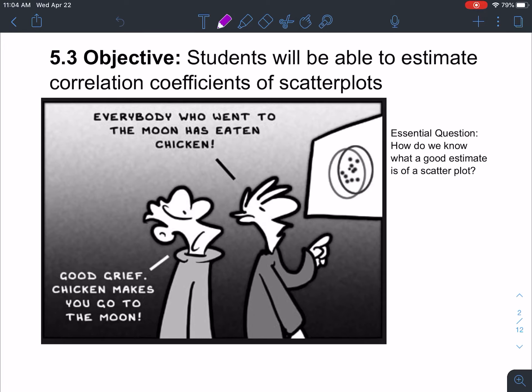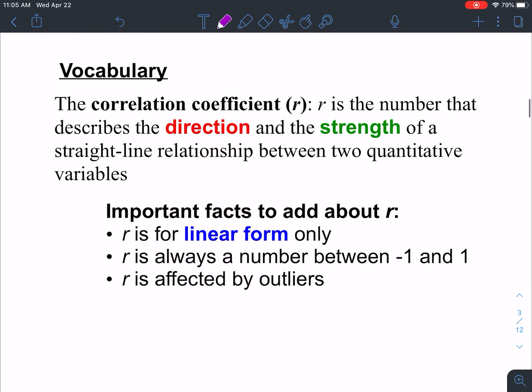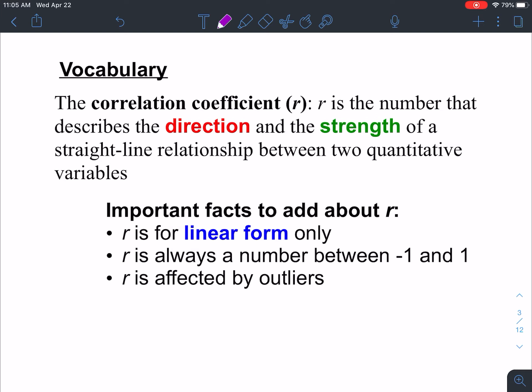Hi guys and welcome to today's notes on 5.3. Today we're going to talk about something called a correlation coefficient, also called our R value. So to start with our vocab here, what is a correlation coefficient? It's a number that describes the direction and the strength of a straight line relationship between two quantitative variables. It's our R value for our scatter plot, telling us the direction and the strength.